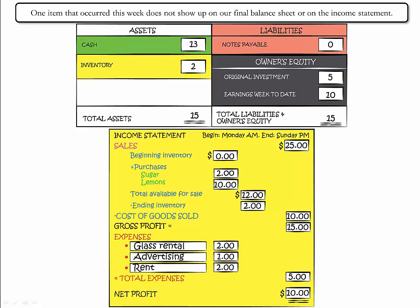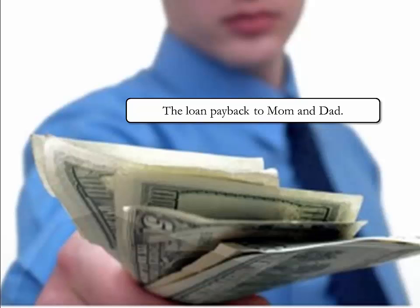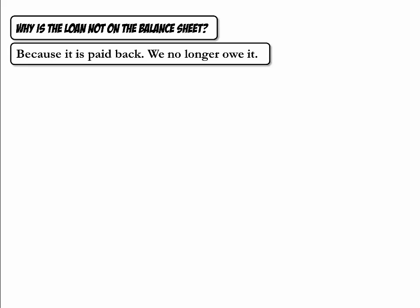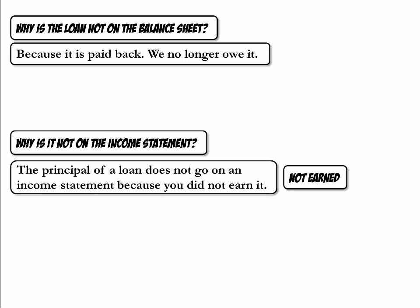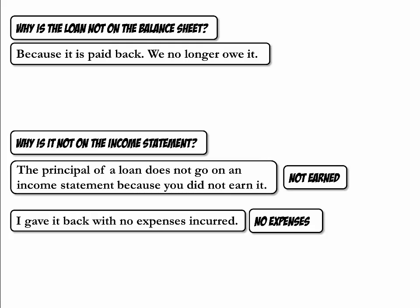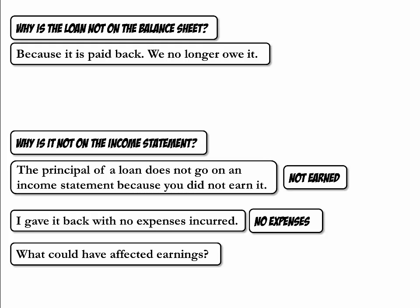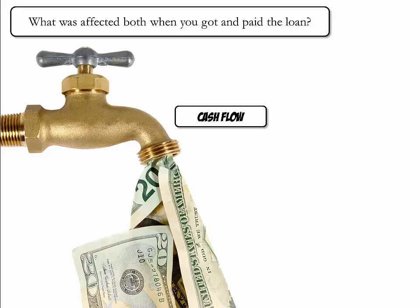There is one item that occurred this week that does not show up on our final balance sheet or on the income statement. It is the loan payback to mom and dad. Why is the loan not on the balance sheet? It's been paid back — we no longer owe it under liabilities, and it's also gone under cash. Why is it not on the income statement? We did not earn it, so the principal shouldn't go there, and we did not incur expenses, so it did not affect earnings. What would have affected earnings? If mom and dad had decided to charge interest. The effect of both getting and paying the loan was cash flow — we'll talk about the cash flow statement later.